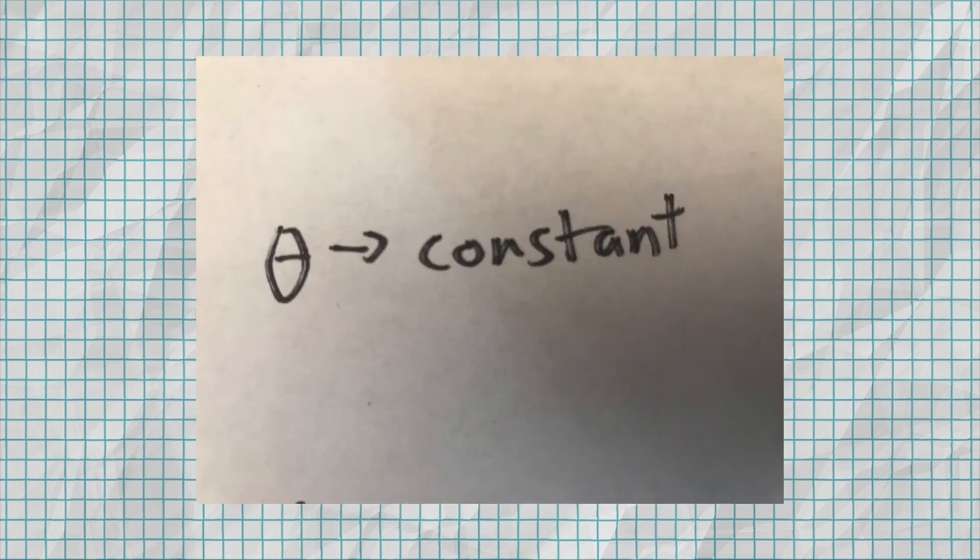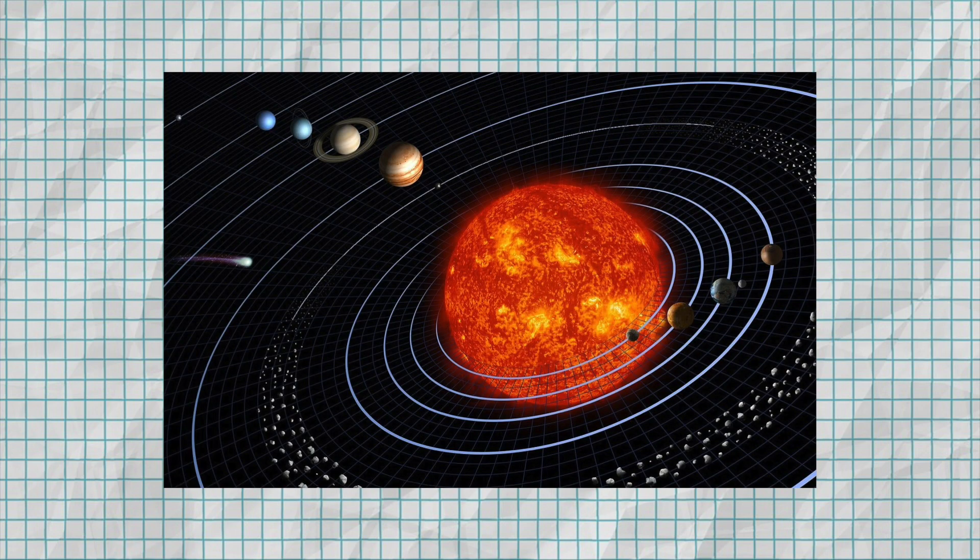But what does this new equation mean? Well, the fact that theta no longer appears in the equation means that it's as if we set theta constant, as if it isn't a variable anymore. This is what it would look like if you were standing on the sun and turning at the same rate as the planet. It would look like theta was never changing, only the radius. So this shift in variables gives us a whole new way of looking at the problem.